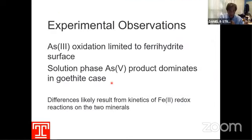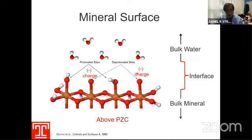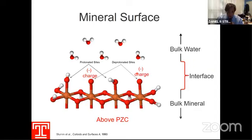In the goethite case, you get oxidation of arsenic three to arsenic five; iron two is formed, but kinetics of iron two release into solution differs. On ferrihydrite, iron two goes directly into solution. On goethite, its residence time is high enough that it stays on the surface and can be rapidly oxidized to iron three with dissolved O₂, generating reactive oxygen species in solution that can further oxidize arsenic three to arsenic five. This accounts for the higher oxidation rates on goethite relative to ferrihydrite — largely due to the difference in release kinetics of iron two into solution.